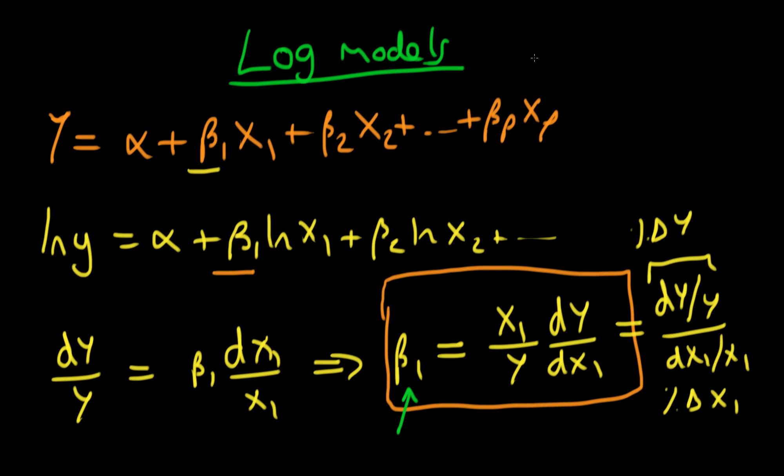That's the example where I've got both my independent and my dependent variable being logged. What happens if I just have my dependent variable? So I've got log y equals alpha plus beta 1 times x1 plus da da da. In this context, what does beta 1 represent here? Well, you can still think about it in percentage terms. Beta 1 shows here what is the percentage increase in y from a 1 unit increase in x1.